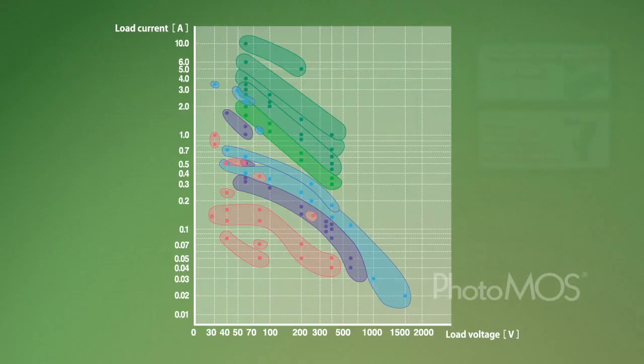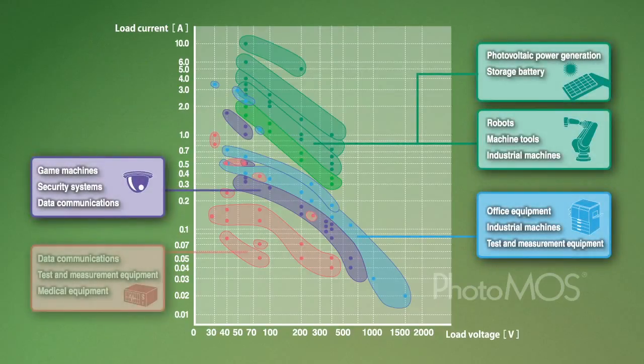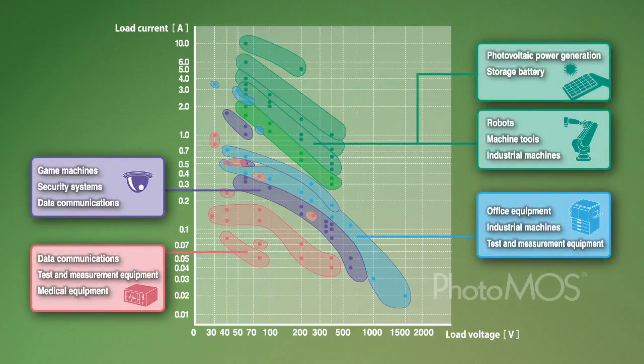Panasonic PhotoMOS have aided the design of equipment with improved reliability, along with smaller size and higher performance. These PhotoMOS are used in various fields. Moreover, to meet various application needs, a wide variation of products has been developed. At present, more than 160 different PhotoMOS are available.